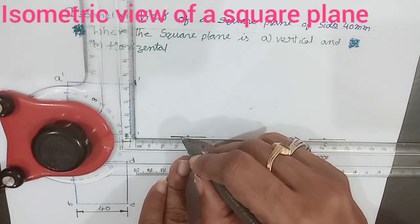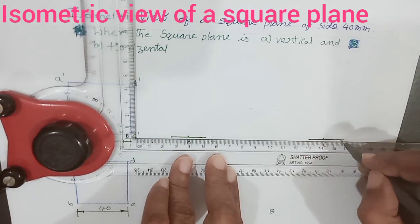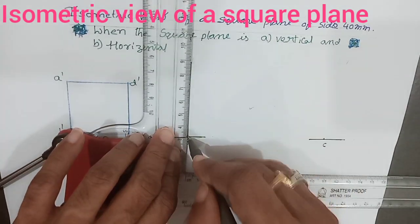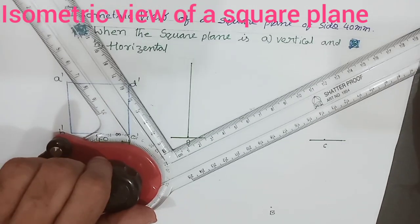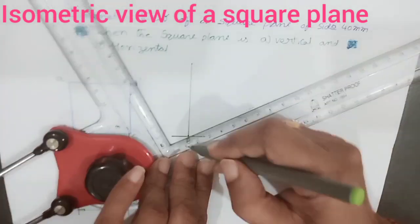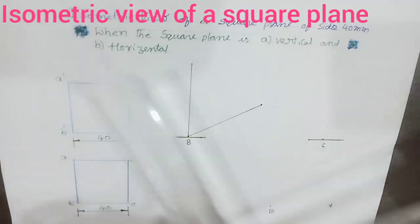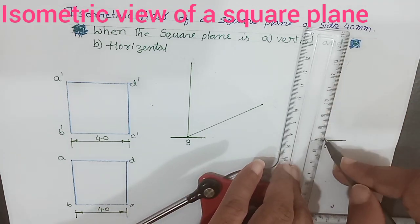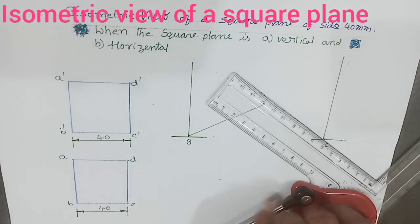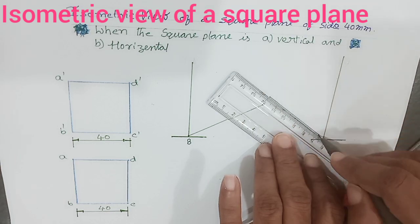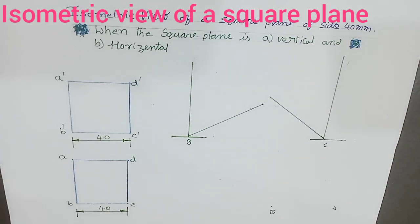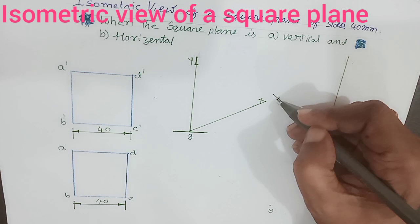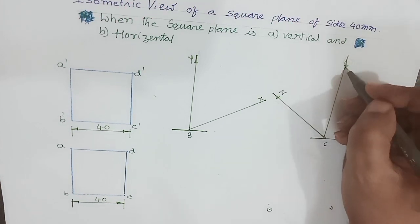As a first step, draw the reference line. After drawing the reference line, then draw the Y axis, X axis, next again Y axis, and then Z axis. So this is the X axis line, this one is the Y axis, this is Z, and this is Y.